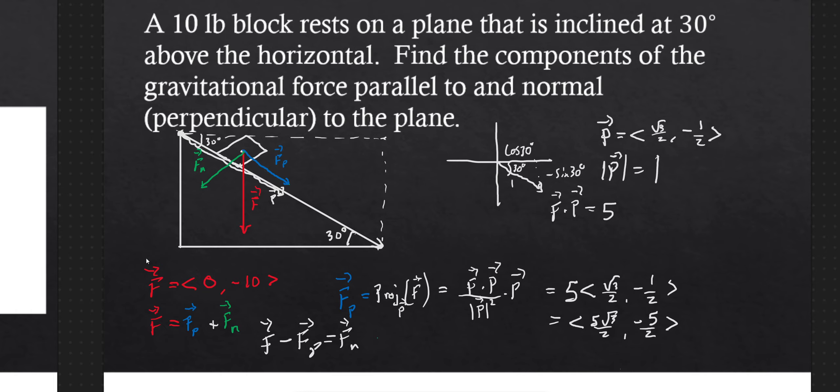So I just need to take my force vector F and subtract my Fp here, and that gives me Fn. We can do that pretty easily. 0 minus 5 square root of 3 over 2. So that's negative 5 square root of 3 over 2. And then minus Fn. So F minus Fn.